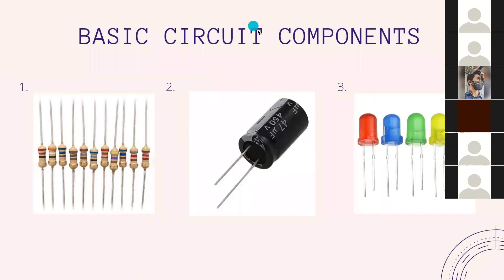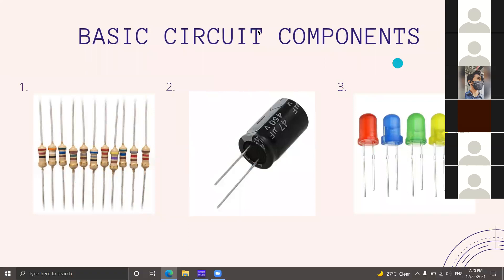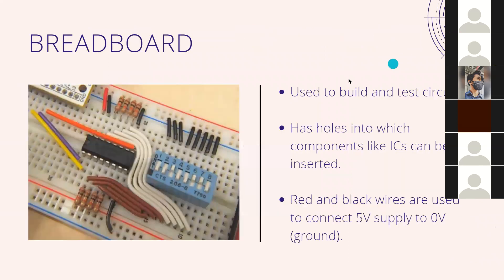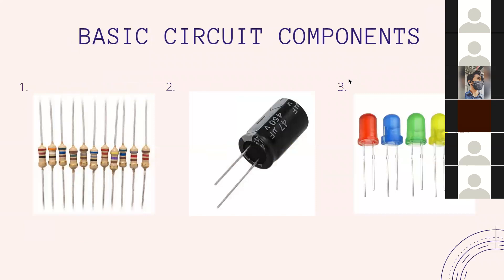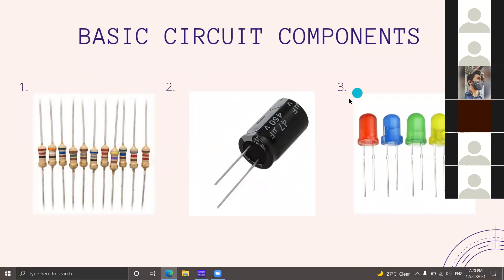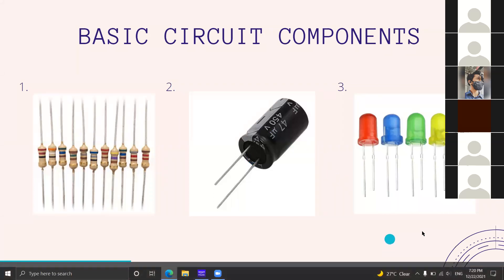Now let's talk about some basic circuit components. I'm sure most of you have seen these. Can you guess what they are? The first is a resistor, the second is a capacitor, and the last are LEDs. These are three basic circuit components, but there are many more. You will be working with a lot of them in the upcoming days in the club.